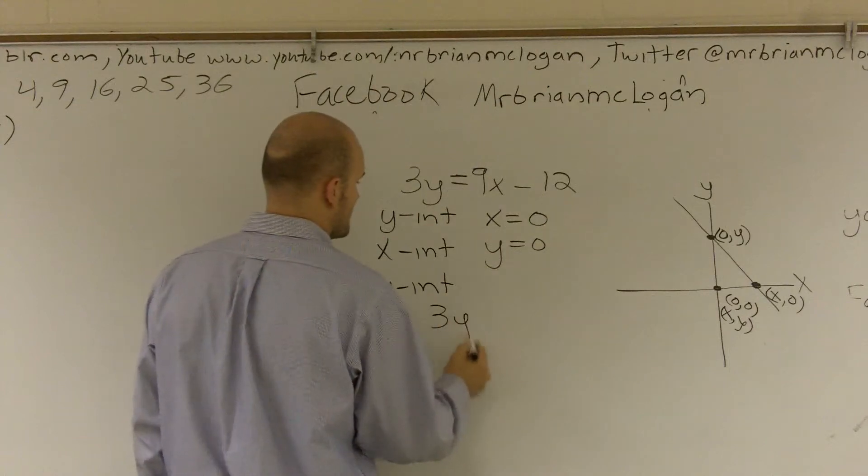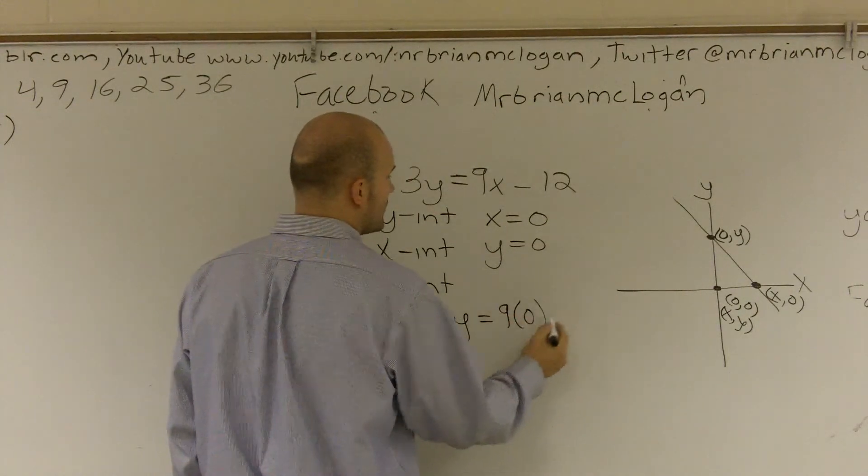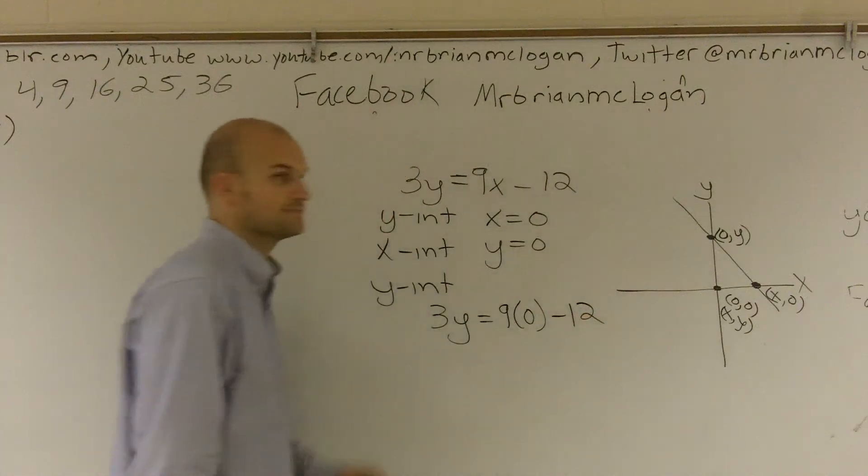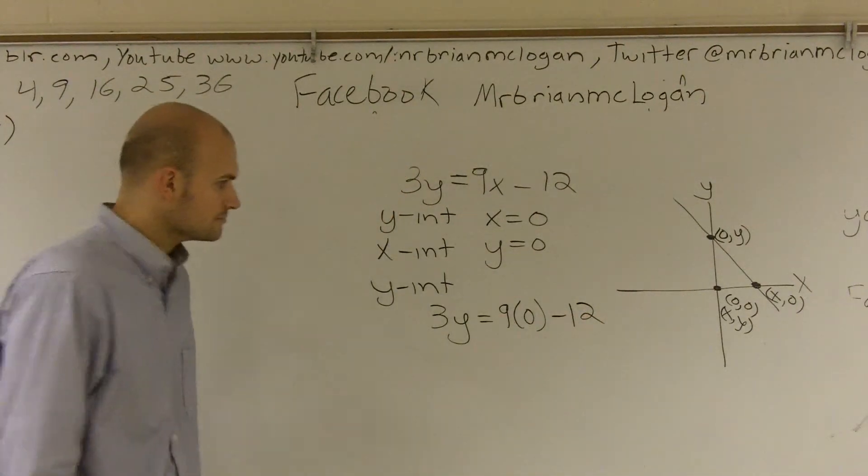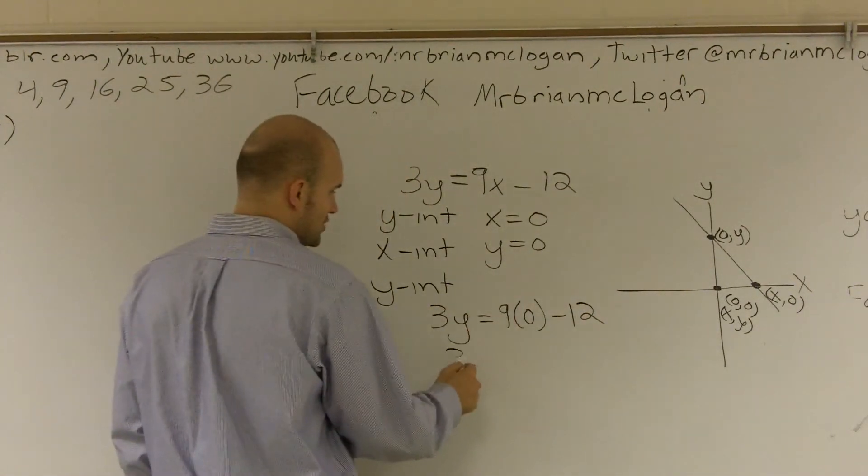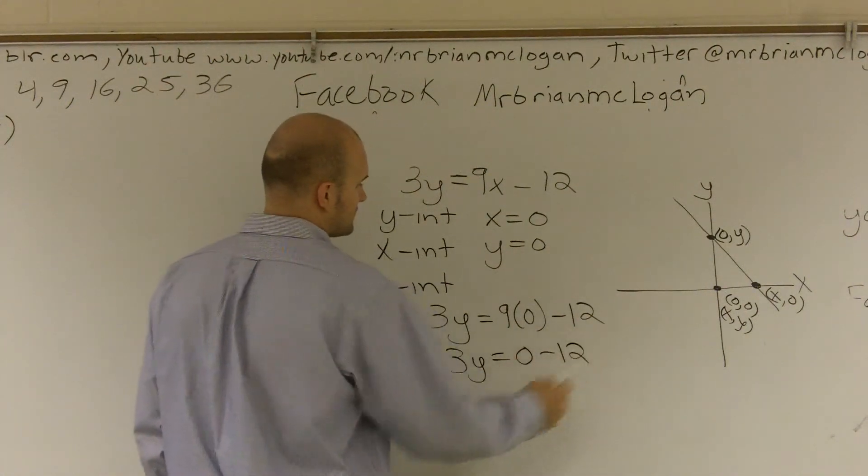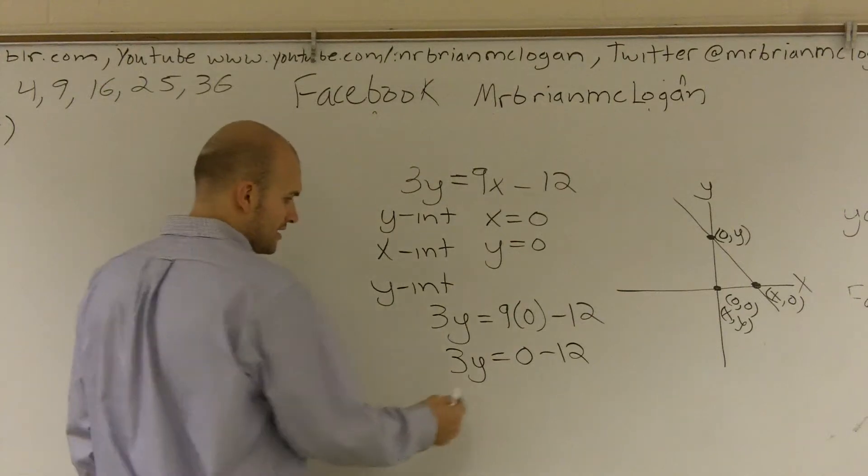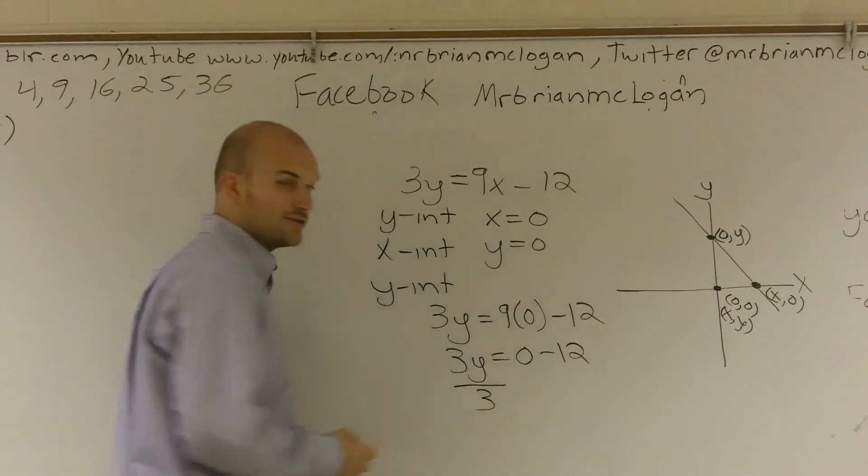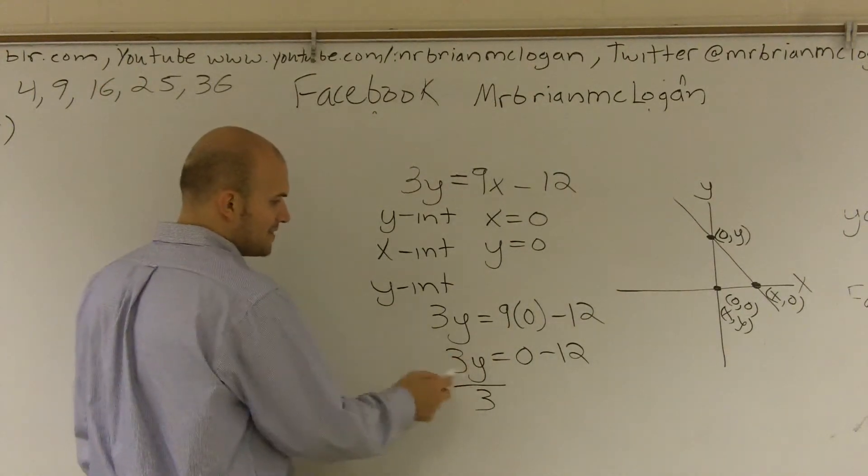I say three y equals nine times zero minus twelve. Nine times zero is zero, so I get three y equals zero minus twelve. Obviously I don't need to keep writing the zero, but I figure I'll be nice to you. I'll let you see where everything's coming at first. So now I divide my threes.